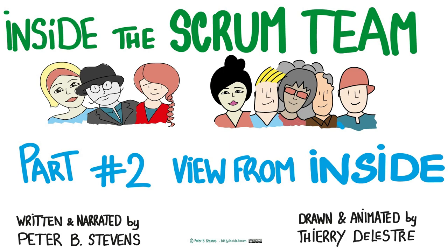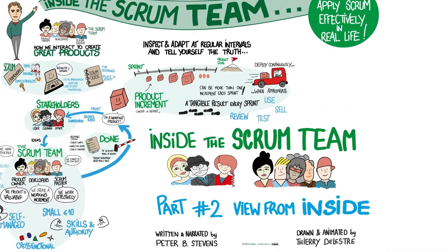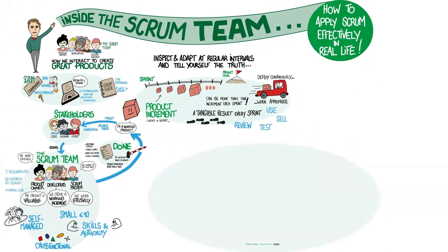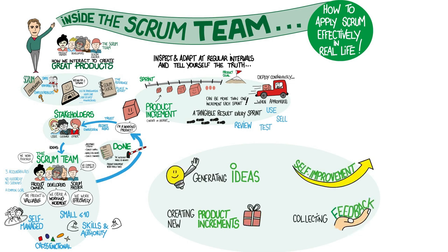Welcome back to Inside the Scrum Team. In part one, we looked at how the Scrum Team interacts with the outside world and discovered how product development in Scrum is a continuous cycle of generating ideas, creating new product increments, collecting feedback, and self-improvement.